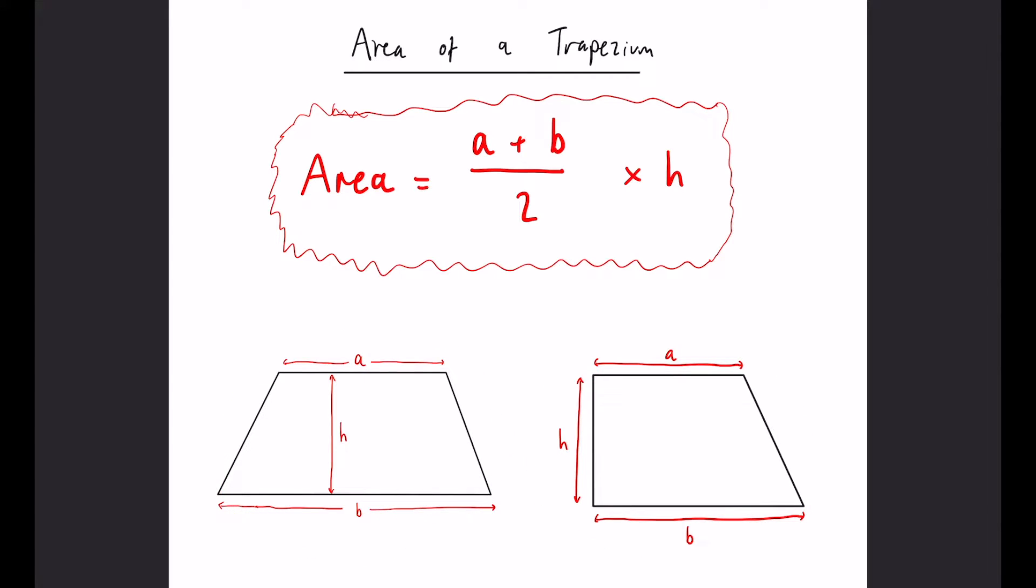So you have your regular trapezium and a slightly more irregular trapezium known as a trapezoid sometimes. They're both virtually the same thing, you can treat them exactly the same, they just might look a bit different so they might throw you off slightly in an exam.